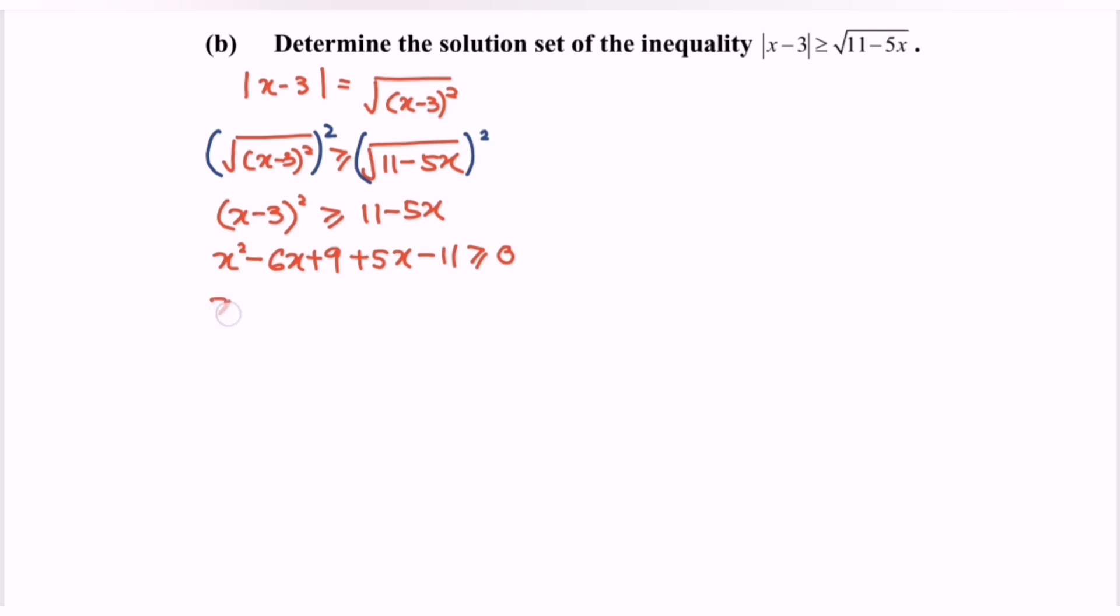Simplify the situation. We will have x squared minus 6x plus 5x and we will obtain negative x minus 2 greater than or equal to 0.